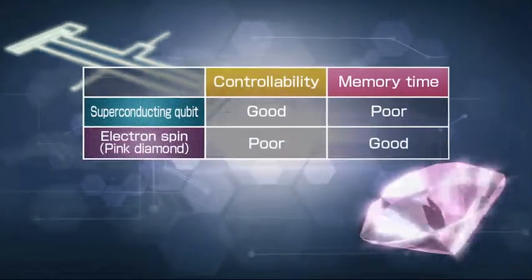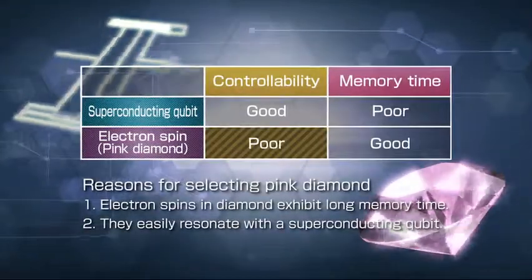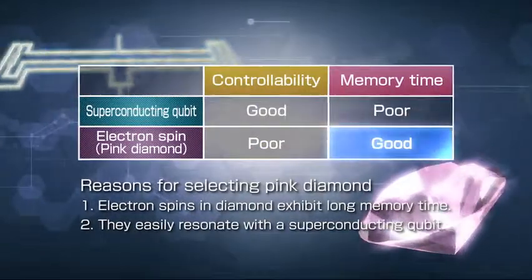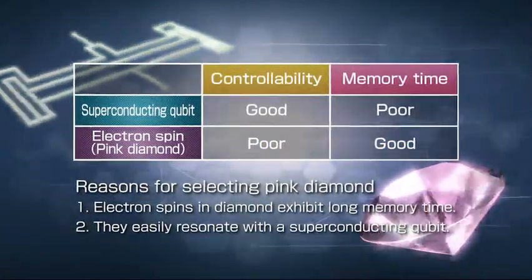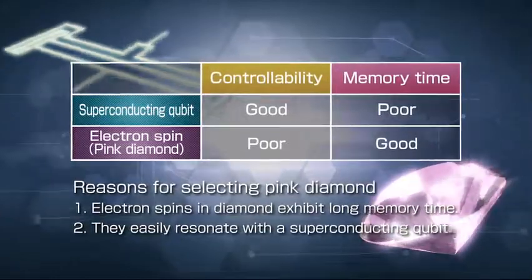NTT Basic Research Laboratories focused on using electron spins in diamond as quantum memory. Though difficult to control, these electron spins retain information for a much longer time.